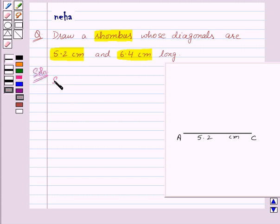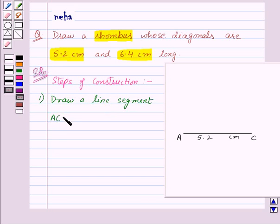Let us write steps of construction side by side. Our first step of construction is draw a line segment AC equal to 5.2 cm.